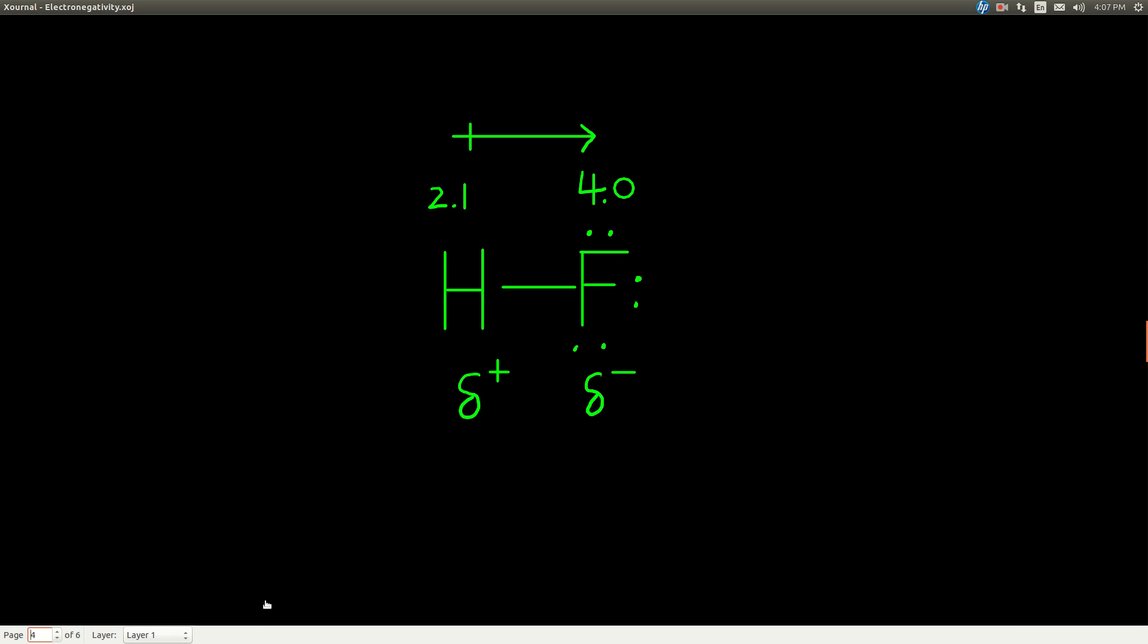So, for example, in this molecule here, hydrogen bonded to fluorine. Fluorine has an electronegativity of 4.0 and hydrogen's 2.1. So fluorine is the more electronegative element, and that means that it's pulling on the electrons, these two electrons here in the bond, towards itself more strongly than hydrogen is. So it pulls them partially away from the hydrogen, not entirely. These two electrons, they're still in between the two atoms, but they're shifted more towards the fluorine than they are the hydrogen.